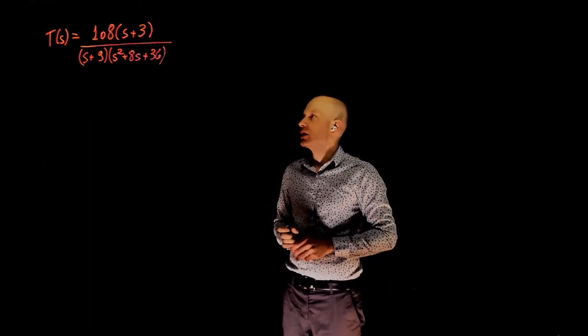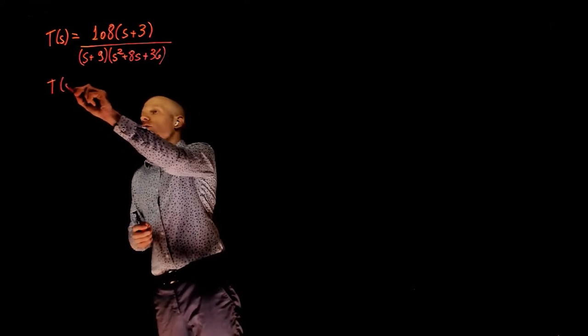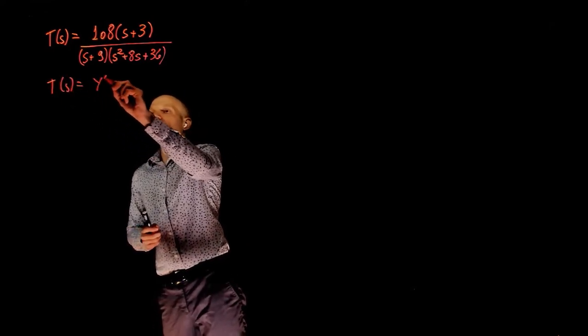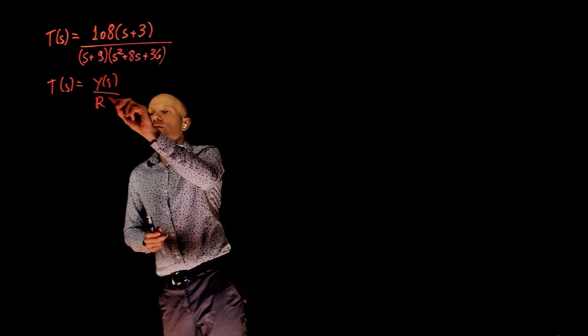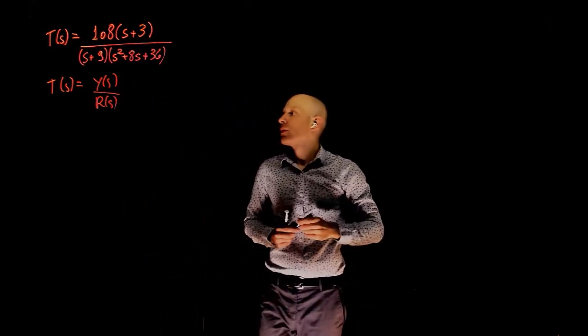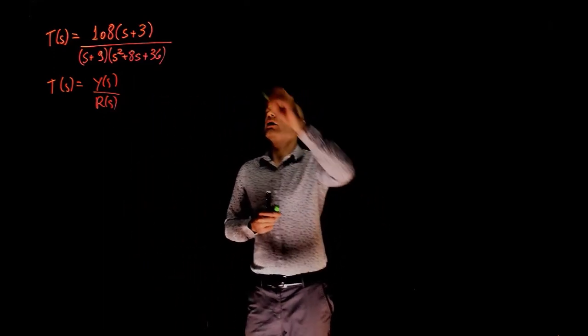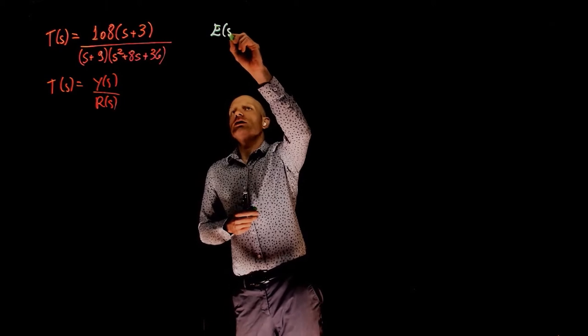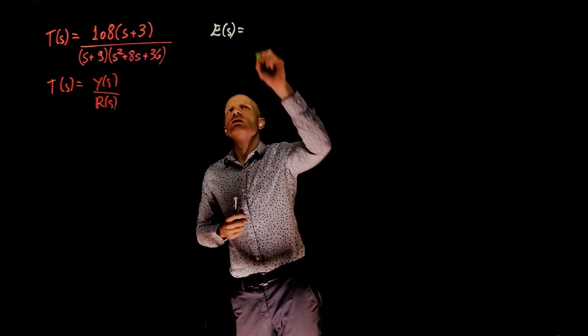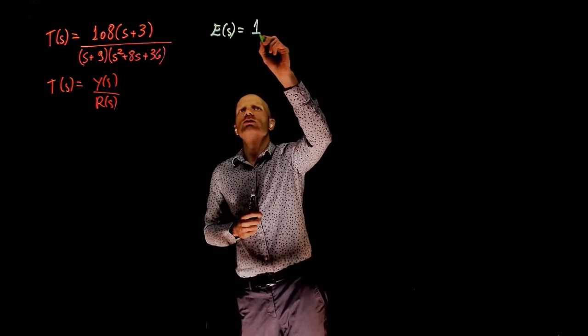Let's start with the second. If T of s is the transfer function, let's call y of s the output and r of s the input. We can now define the error as the input r of s, which is a step input, so that is 1 over s.